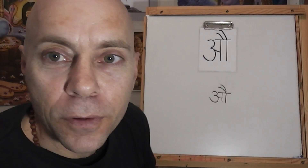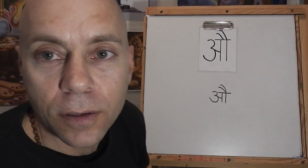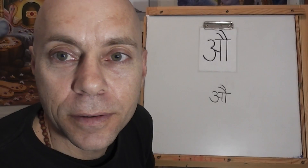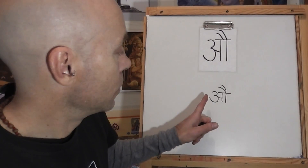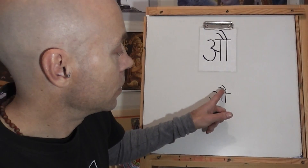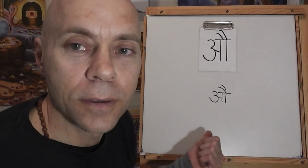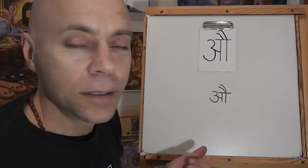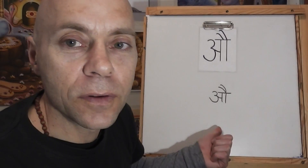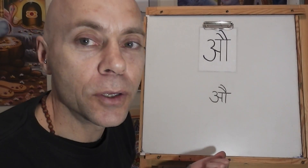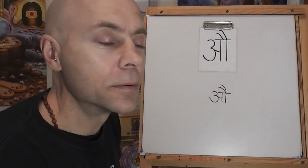Both of the hooks come off the second line. When they both come off the first line, it's the equivalent of the twelfth letter, which is A. But this is AU, transliterated as AU.